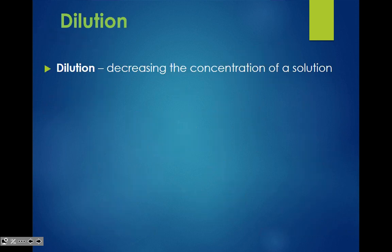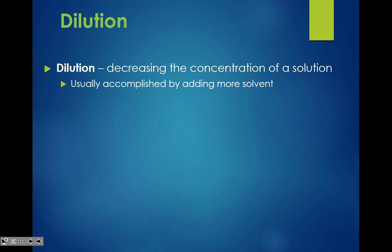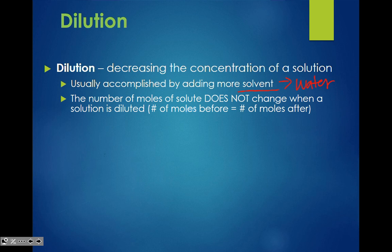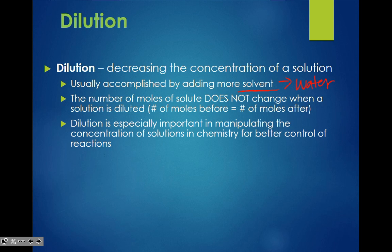A dilution is when I take a standard solution and dilute it by adding water to it. Dilution is decreasing the concentration of a solution, usually accomplished by adding more solvent — typically water. The number of moles of solute does not change when a solution is diluted; the number of moles before equals the number of moles after, because you're not adding a substance — you're just changing the concentration.